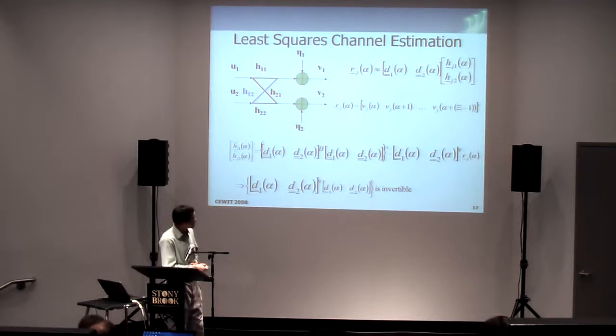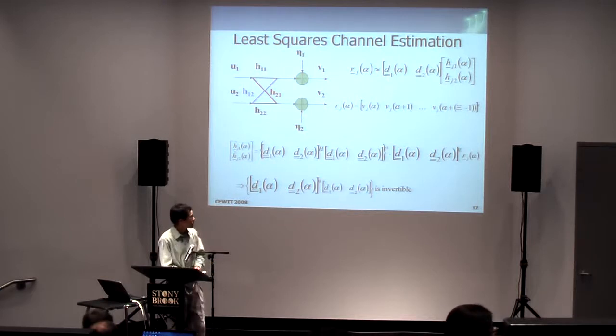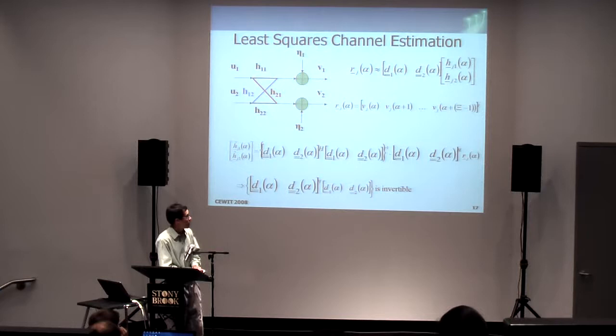Again, what this does is this formulates our environment as an equation here. This V1 and V2 is kind of a convolution matrix and represents the combinations between the pilots and the channel. And it equals, again, the receive signal. As you can see, there's no noise in here, so it's kind of approximate in nature.